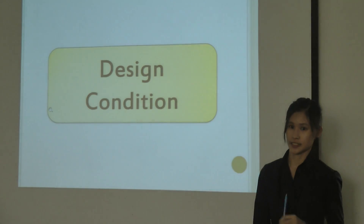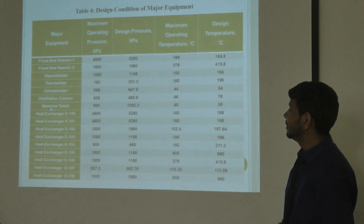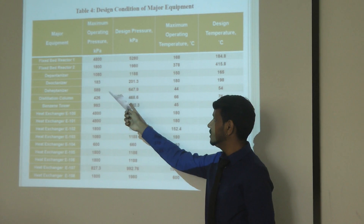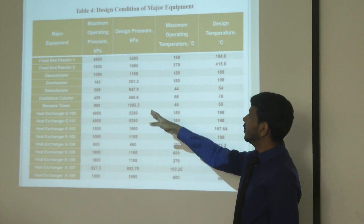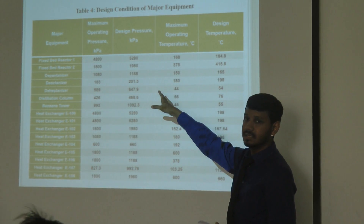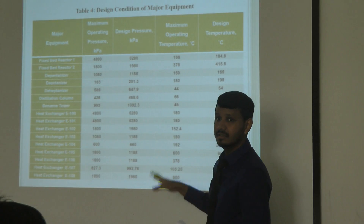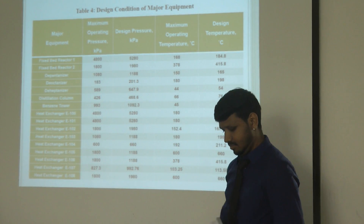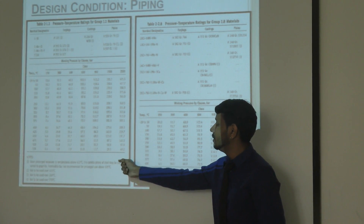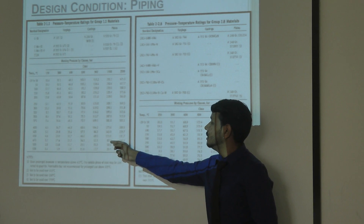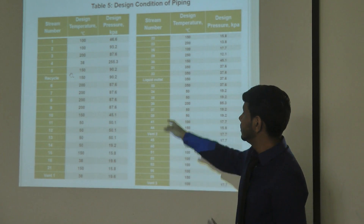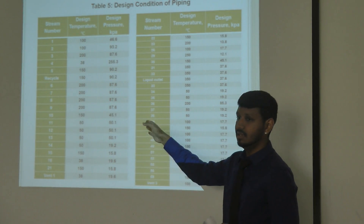The design condition was carried out for major equipment. For example, the operating pressure from HYSYS for the fixed-bed reactor is 4,000 kPa. We extend this to the maximum operating pressure by adding 20%, and then a further 10% on top to obtain the design pressure. This is our final table for the maximum operating pressure and design pressure. For piping, we used the ASME B16.5 standard to determine the pressure class.